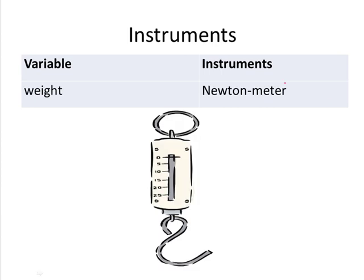Here we have the instrument for measuring weight, called a newton meter also called a spring balance. You hang the object you want to measure onto this hook and then gravity pulls the object downwards stretching the spring that's inside the newton meter. There's a little marker at the end of the spring that moves as the spring is stretched and then you can read off the value on the scale.